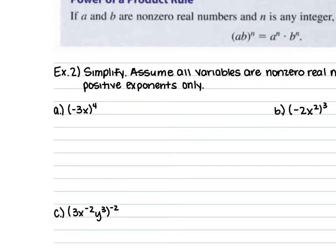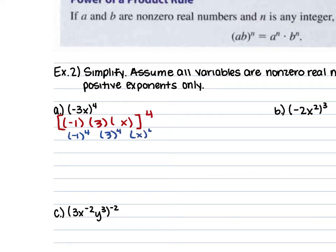I like to rewrite these as negative 1 times 3 times x in brackets, all raised to the 4th power. So this negative 1 is being raised to the 4th power, this 3 is being raised to the 4th power, and this x is being raised to the 4th power. Negative 1 to the 4th power gives us positive 1. 3 to the 4th power is 3 times 3 times 3 times 3, which is 9 times 9, giving us 81. And x to the 4th is just x to the 4th. Multiplying all of these: 1 times 81 times x to the 4th gives us 81x to the 4th power. Whenever we have parentheses around terms, that outside power is distributed to each part inside.